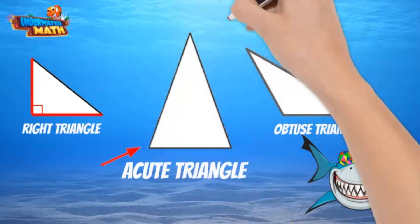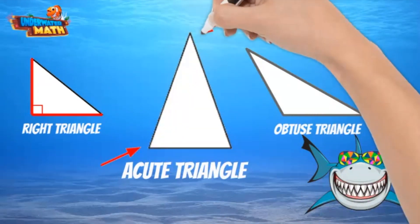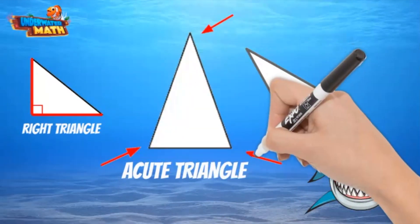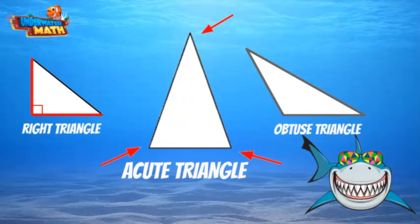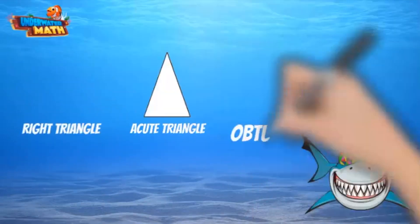Acute triangles are characterized by having three angles that are less than 90 degrees. Angles less than 90 degrees are called acute angles. All three angles in the triangle must be less than 90 degrees to be classified as an acute triangle.